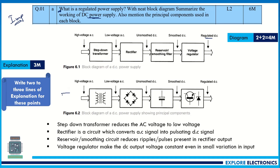Then write the block diagram and the principal components. There will be a step-down transformer, then a rectifier, then a smoothing or reservoir circuit, and then a voltage regulator — this carries two more marks. Then briefly explain what each block does: the step-down transformer steps down from high voltage to low voltage AC, which is then given to the rectifier circuit. There are different types of rectifiers.